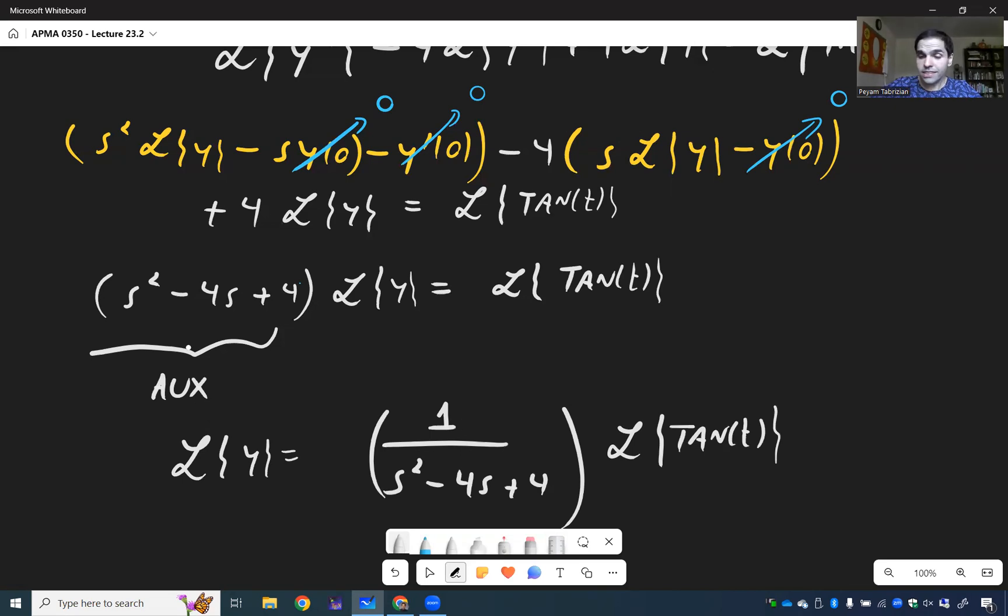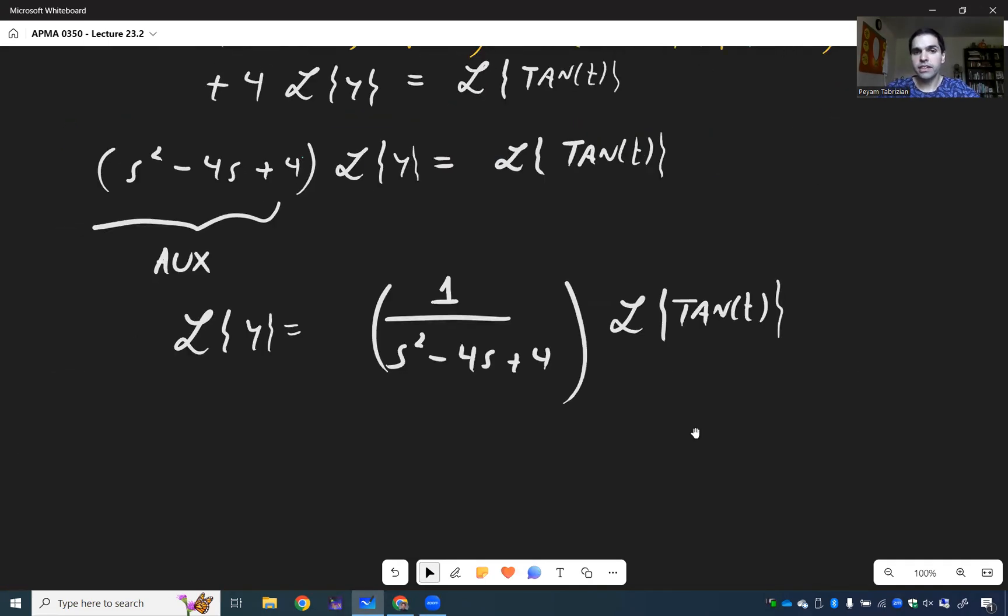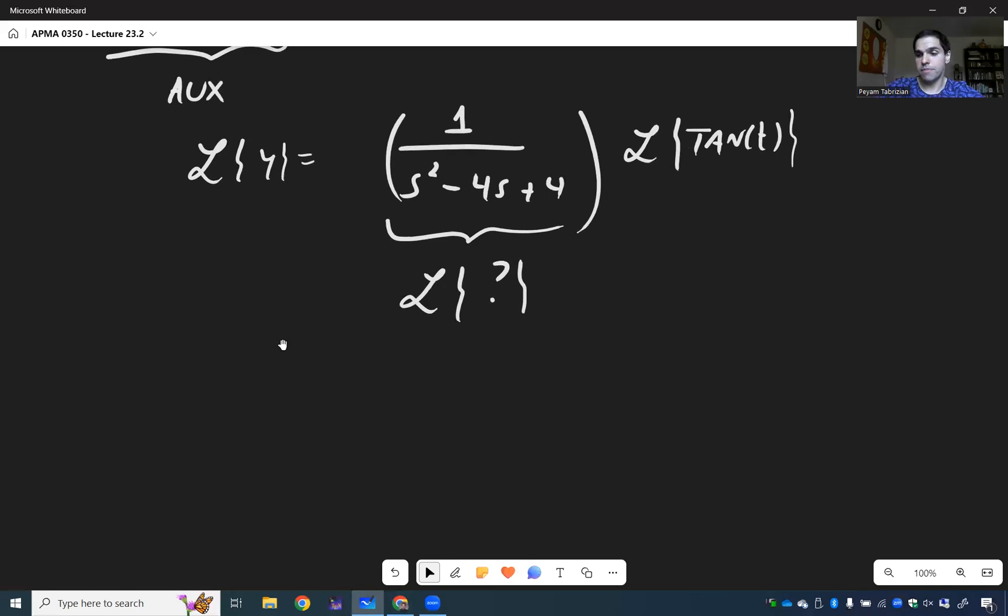And now, what's the idea? Well, Laplace tangent of t is already a Laplace transform. Let's try to write this left-hand side as Laplace of something. And then we can use convolution. That's the game plan.